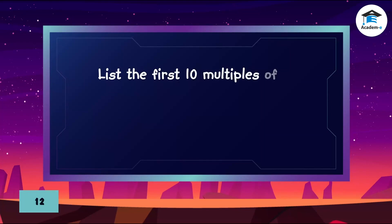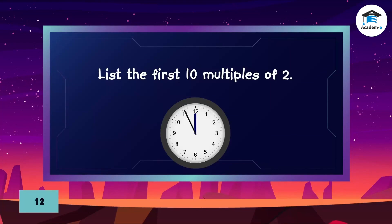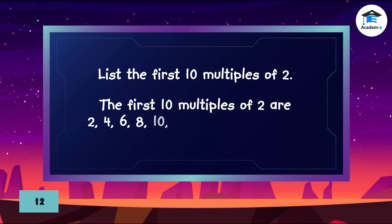List the first 10 multiples of 2. The first 10 multiples of 2 are 2, 4, 6, 8, 10, 12, 14, 16, 18, and 20.